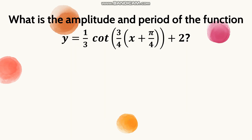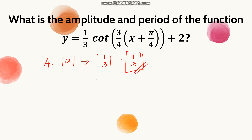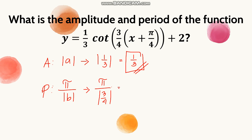Let's solve for the amplitude and period of a function where a is 1/3 and b is 3/4. The amplitude is the absolute value of 1/3, which equals 1/3. For the period, it's pi over the absolute value of 3/4. Multiplying by the reciprocal gives pi times 4 over 3, so the period is 4pi over 3.